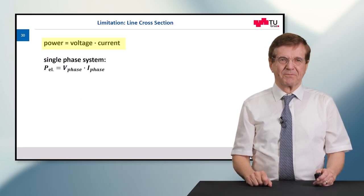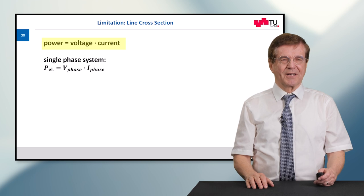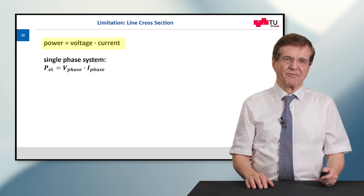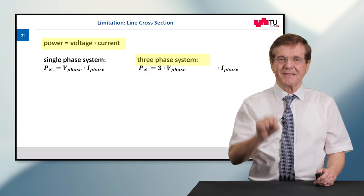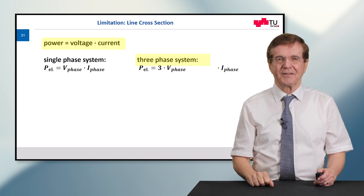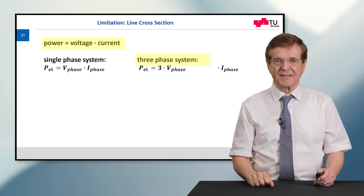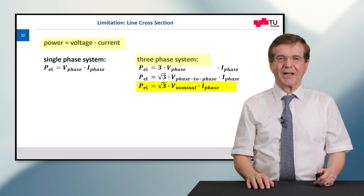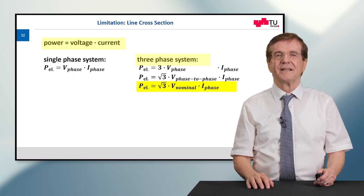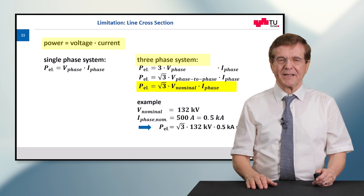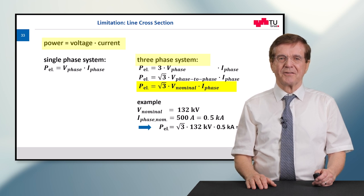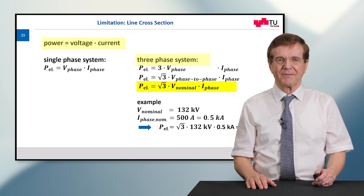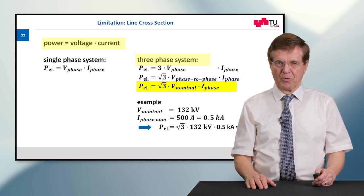Now a little calculation follows. Power is voltage times current. And in single phase system, this is the formula given for this: P is V times current. In a three phase system, we have three voltages, three currents, the so-called phase voltages, phase currents. And after some transformations, we arrive at the formula given in yellow. Don't be confused. I give you an explanation and an example. We assume that we have 130 kV overhead lines with a nominal current of 500 amps. And here we arrive that the maximum transportable power is something like 114 megawatts.